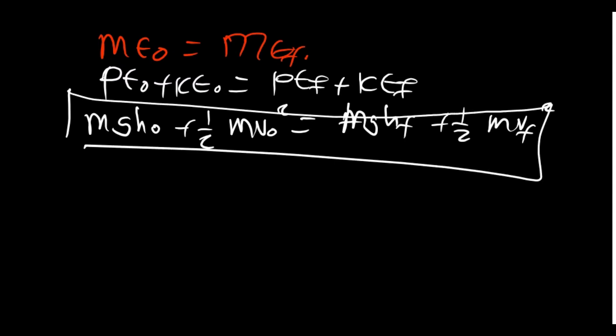This is the general formula for conservation of energy. If initially you have potential energy, include it; if there is no kinetic energy, cancel it. That will help you find any missing variables. That is it for conservation of energy - next is going to be non-conservation of energy.